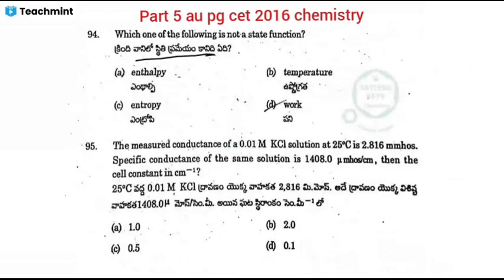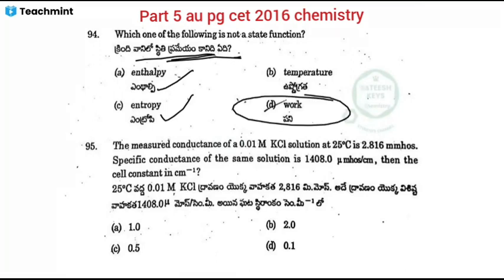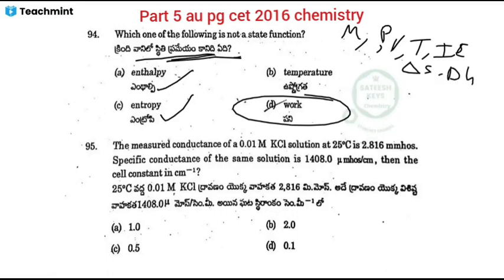Next: a state function. Option D is correct. State functions are variables determined only by the initial and final states of the system, not by the path followed. State functions include mass, pressure, volume, temperature, internal energy, entropy, free energy, and enthalpy. Heat and work are path functions, not state functions.